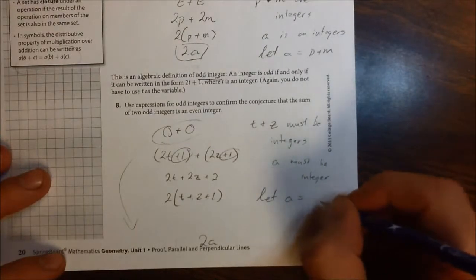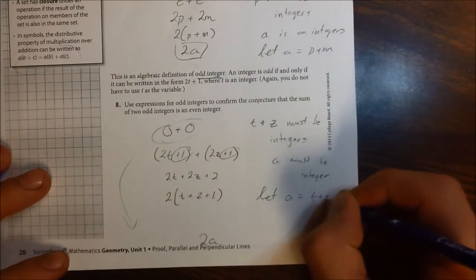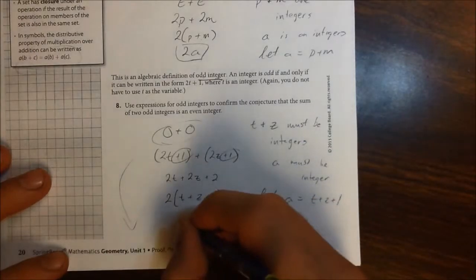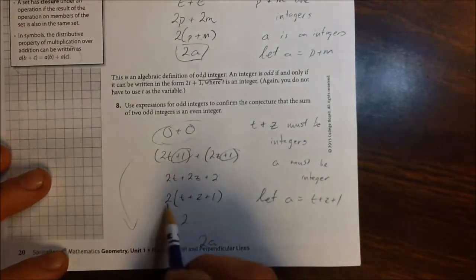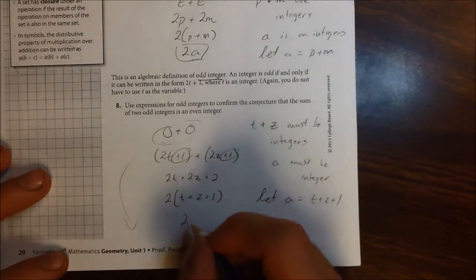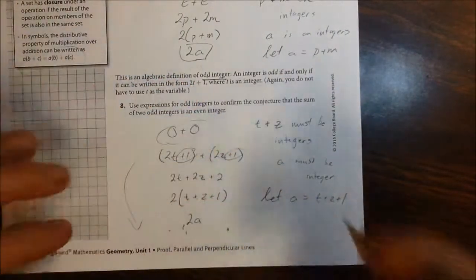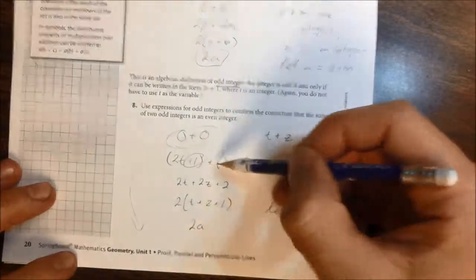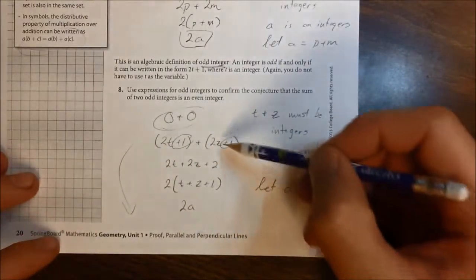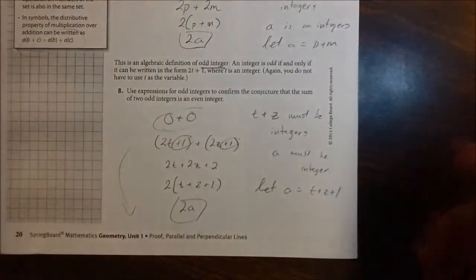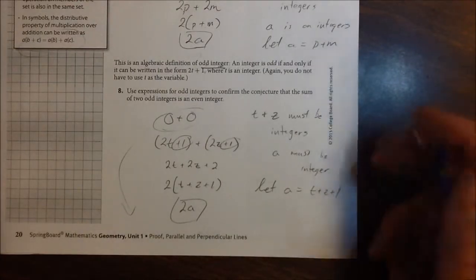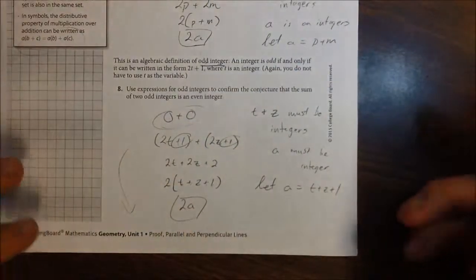And I'm going to do a little substitution and say, rather than 2 times this big ugly thing, I'm going to say 2 times a. And voila, we've taken this expression of two odd integers and manipulated it so that it is in the form of an even integer, which shows odd plus odd is even.